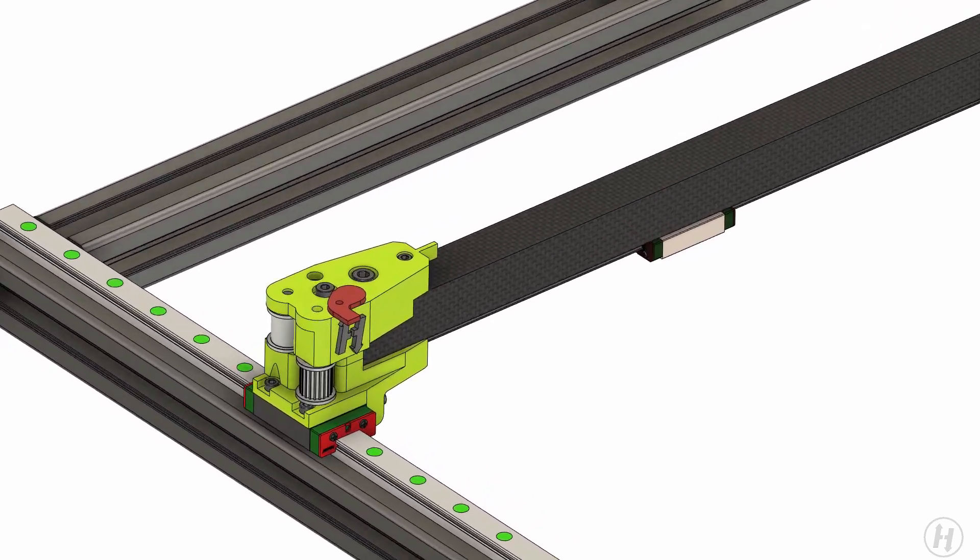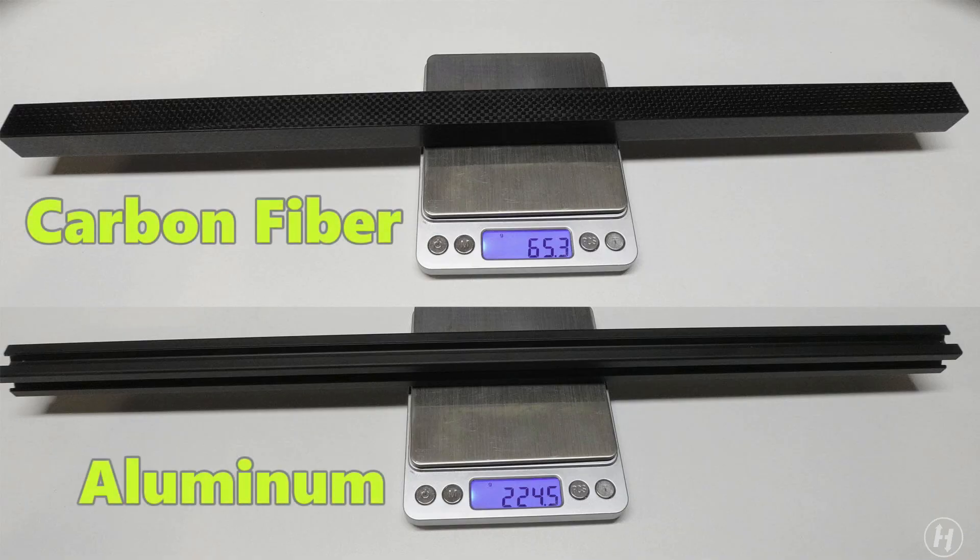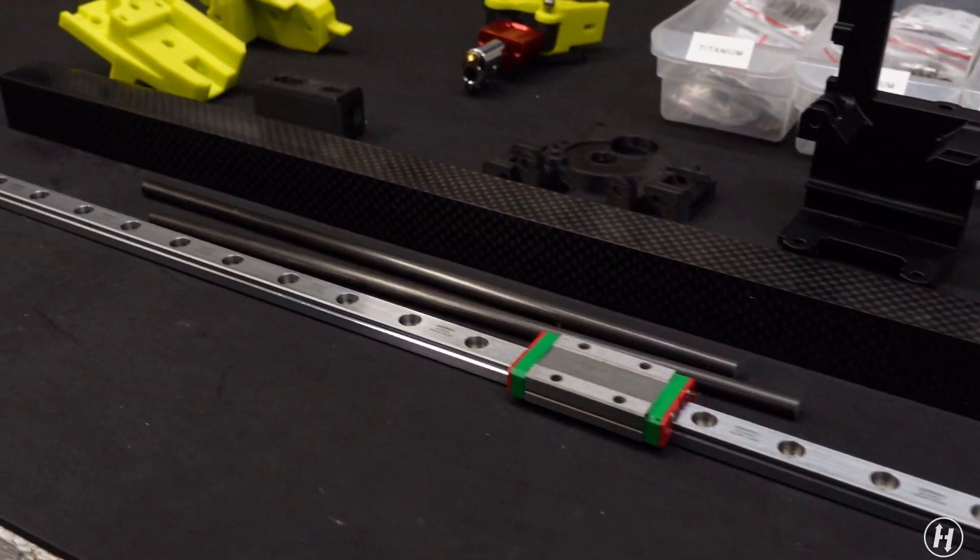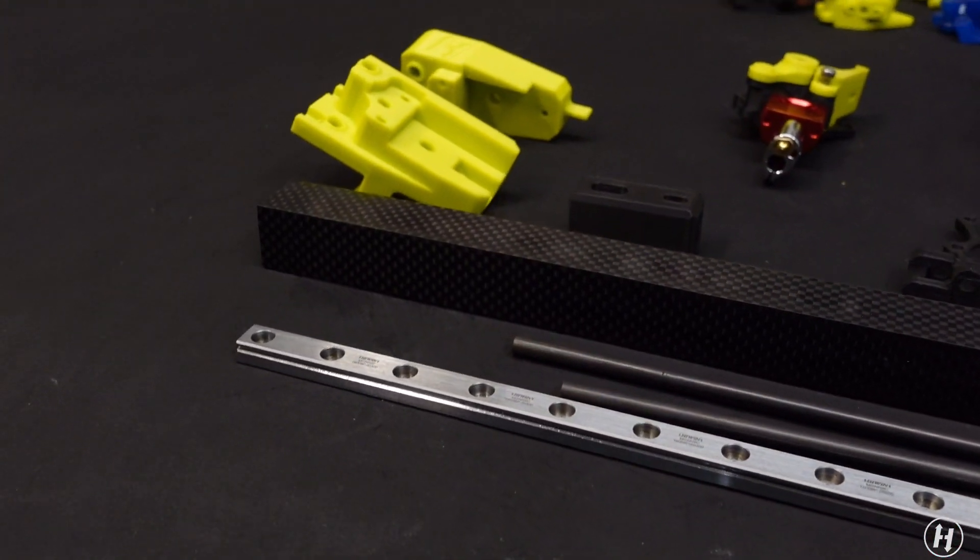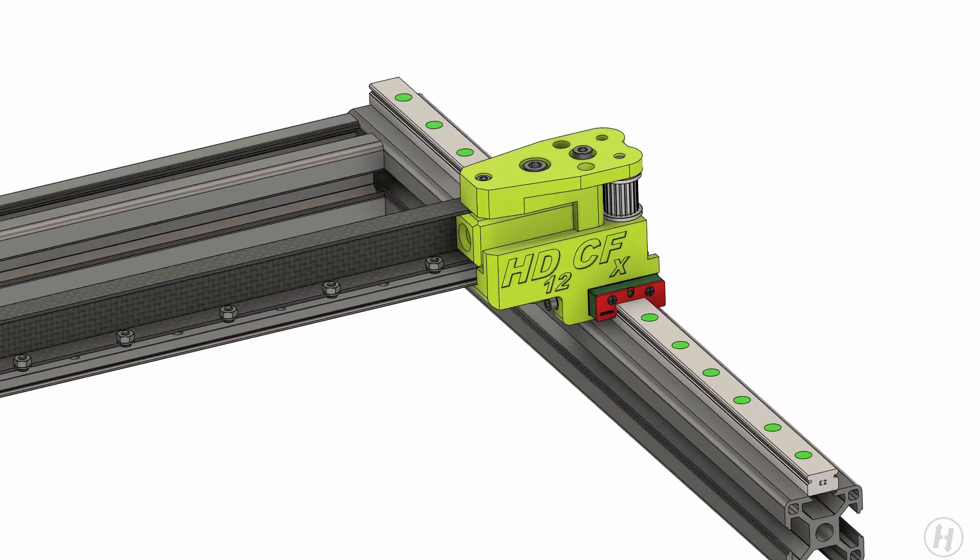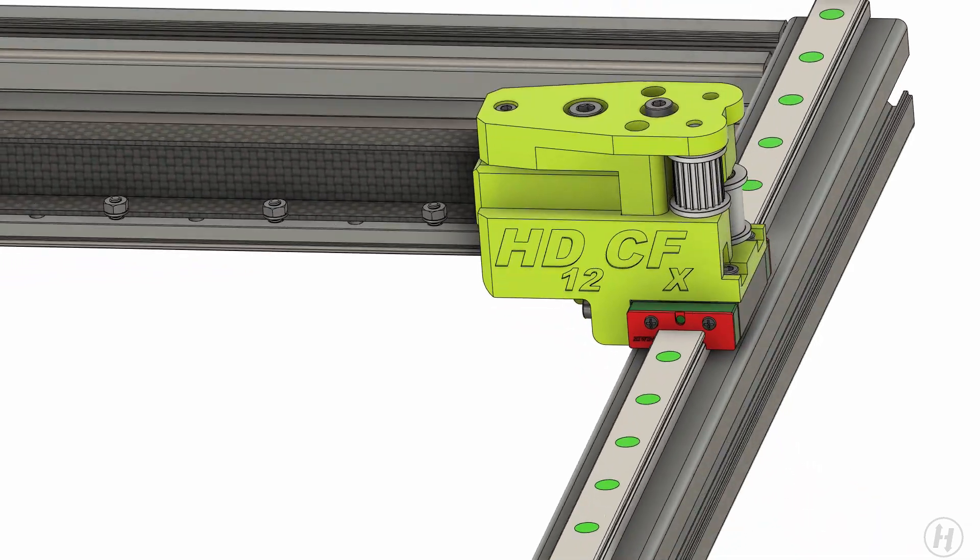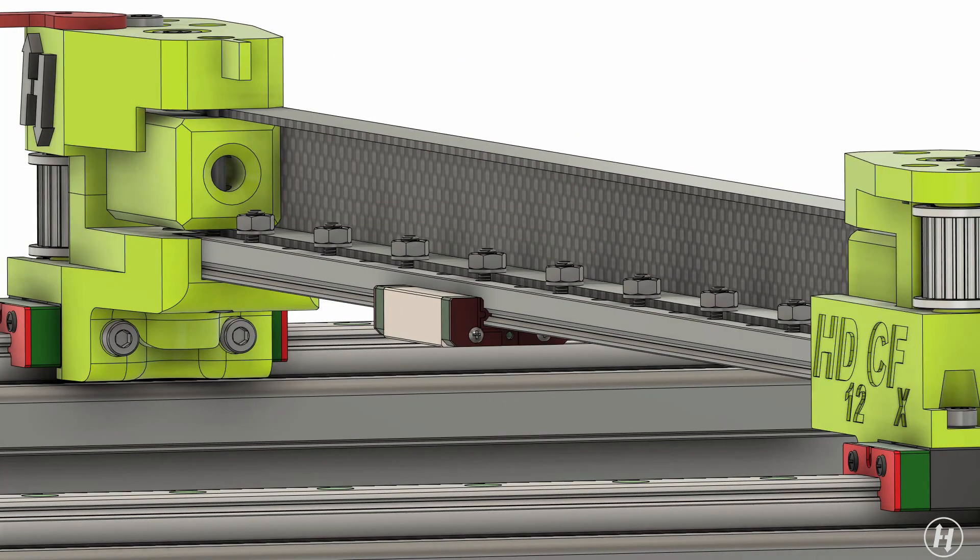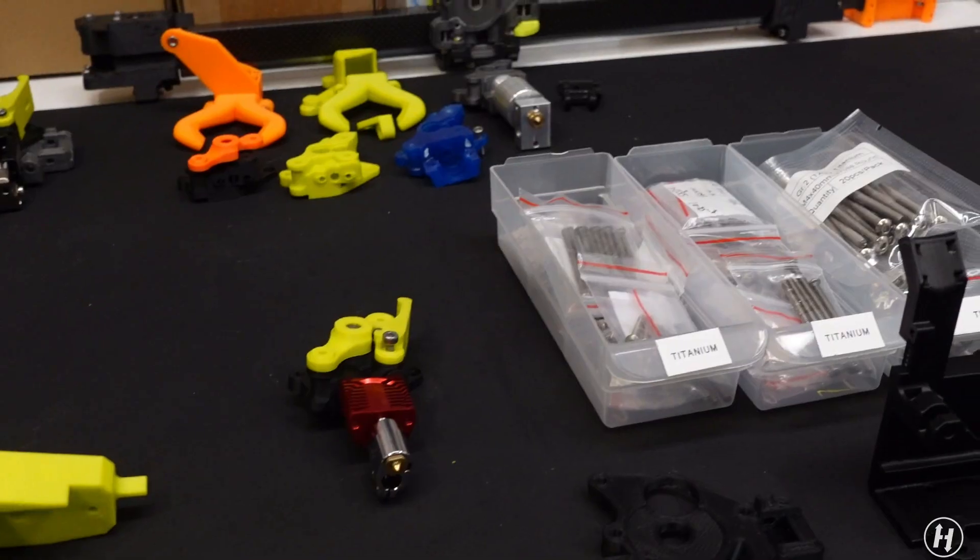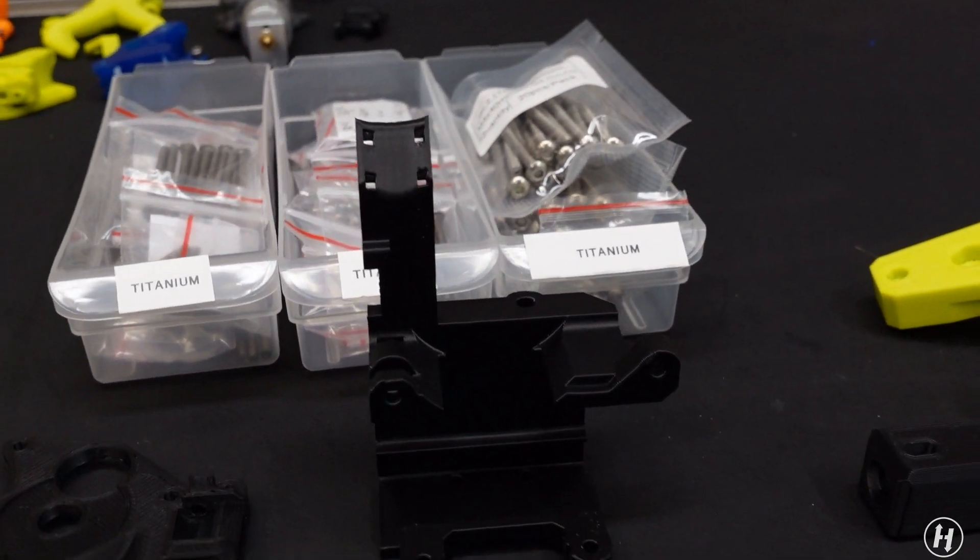One good way to reduce its weight is to trade the aluminum extrusion for a carbon fiber tube. You can find a link to my source of supply for that carbon tube in the details section here below. I also swapped the 12mm wide linear rail for a much lighter 9mm one, then I installed titanium hardware everywhere I could.